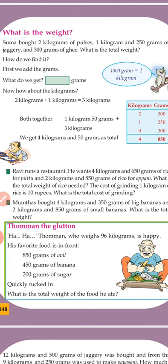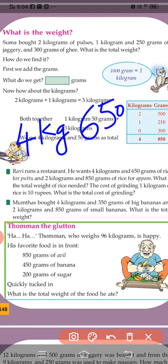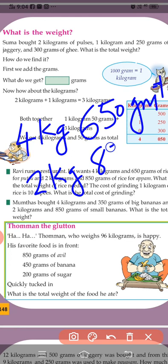Moving to the next problem. Ravi runs a restaurant. He wants 4 kilograms and 650 grams of rice for food, and 2 kilograms and 850 grams for rice for wrap. What is the total weight of rice needed? We add 4 kg 650 g plus 2 kg 850 g.